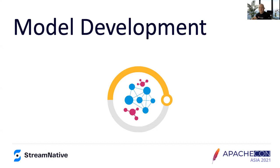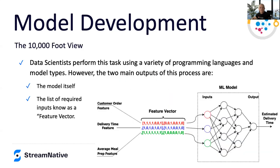Now we've completed the data acquisition phase. Let's look at the model development process itself. At a 10,000-foot view, since we're not data scientists but model deployers, data scientists perform this task using any variety of programming languages and model types. On the left-hand side, they have a list of features — input values fed into the model. On the right side, they have the model itself. At the end of the process, you're given two things: the model itself and the feature vector definition you have to fill.